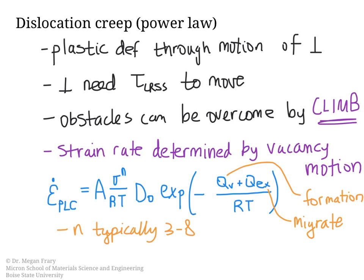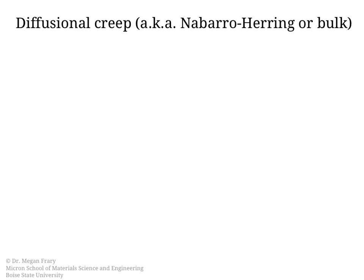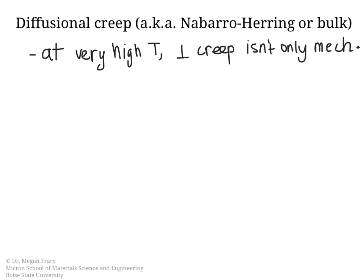Let's move on now and look at diffusional creep. Dislocation creep, or power law creep, usually happens at higher stresses and/or lower temperatures, because you need that stress to get the dislocations moving, although you also need the temperature to allow dislocation climb to happen. However, if the temperature is very high and the stress is not too high, then other mechanisms are possible. In fact, without dislocations moving, vacancy diffusion alone can cause plastic deformation.